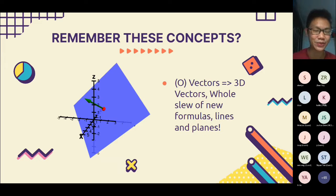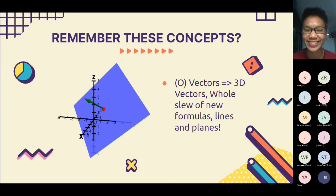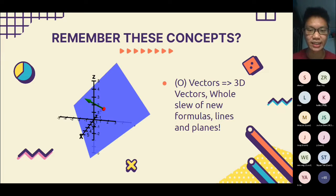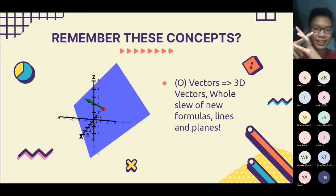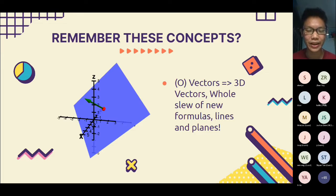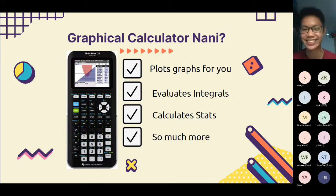Vectors are a whole new world in JC. In E-Math, vectors were simply two-dimensional addition and subtraction. In JC, vectors extend to three dimensions, and you can express lines and planes using formulas. These have their own interactions — for example, finding the point of intersection between a plane and a line involves vectors. It can initially be overwhelming.